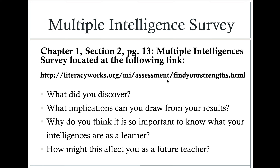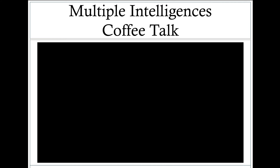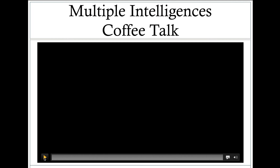To get a better idea of what your intelligence is and how you might gear your instruction, go ahead and look at chapter one, section two, page 13 — there's a link to the multiple intelligences. I showed it to you in the iBook overview video, but the link is here again if you need it. After you take the survey and figure out what your strongest intelligences are, think about: What did you discover? What are the implications you can draw from your results? Why is it so important to know your intelligences as a learner? And how might this affect you as a future teacher? To learn a little bit more about multiple intelligences, we're going to listen to a coffee talk and get some more information. I hope you enjoy.